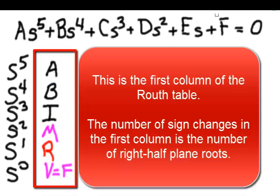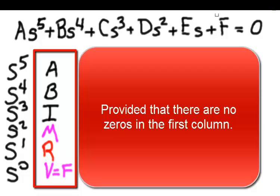This is the first column of the Routh table. The number of sign changes in the first column is the number of right half plane roots, provided that there are no zeros in the first column.